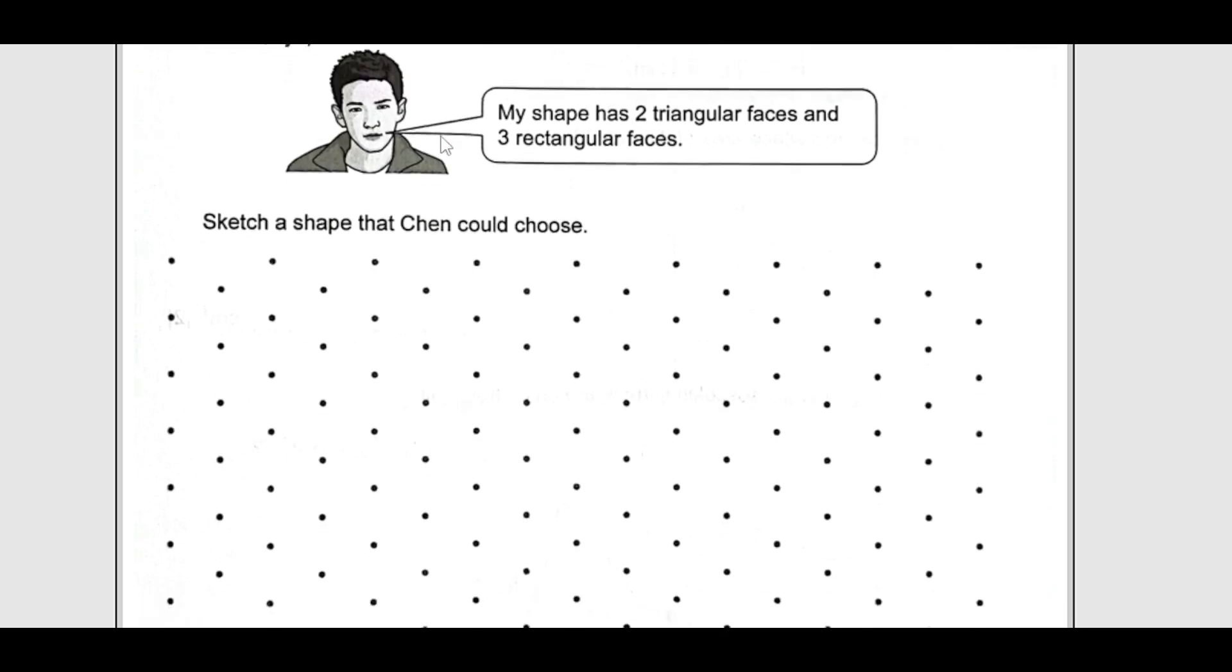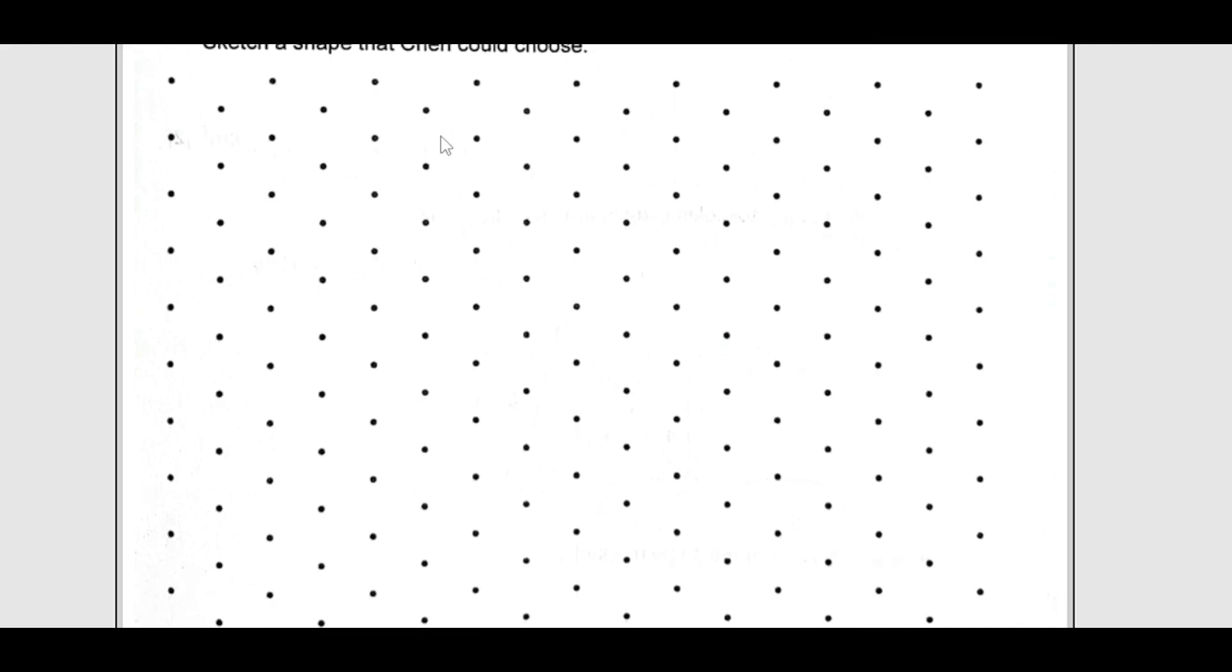Number 29, Chen chooses a 3D shape. Chen says my shape has 2 triangular faces and 3 rectangular faces. Sketch the shape that Chen is choosing. It can be like this, triangular. Then we have 3 dots here. You are not given the dimension, so you can choose in any way like this.